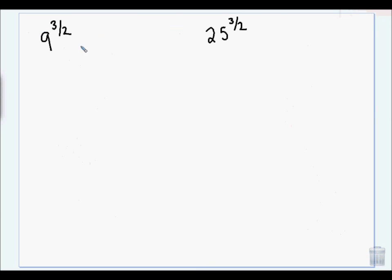Okay. So I have square root of 9 to the third. Square root of 9 is 3 to the third. So that's 3 times 3 times 3, so 27.